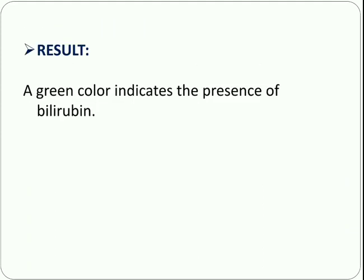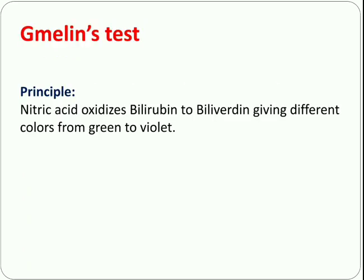As a result, we can see a green color indicating the presence of bilirubin. The next test we are learning is the Gmelin test. The principle of the Gmelin test is that nitric acid oxidizes bilirubin to biliverdin, giving different colors ranging from green to violet.